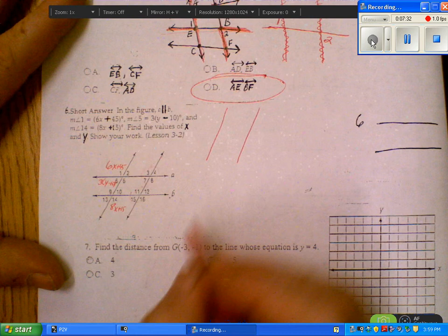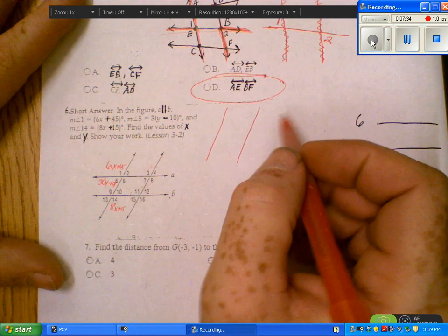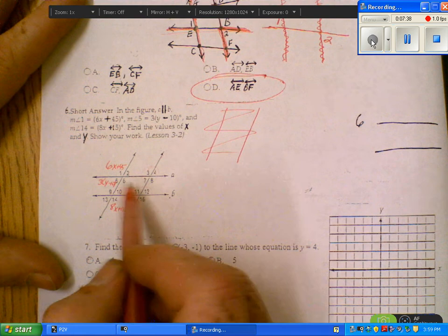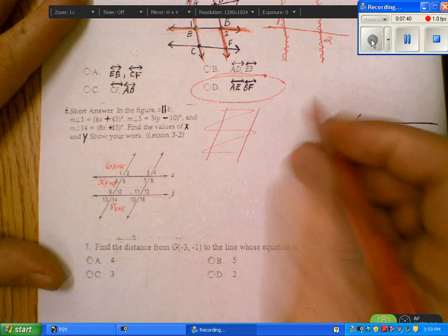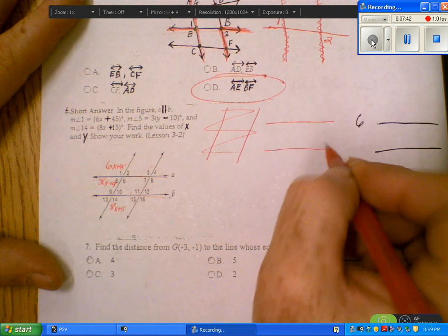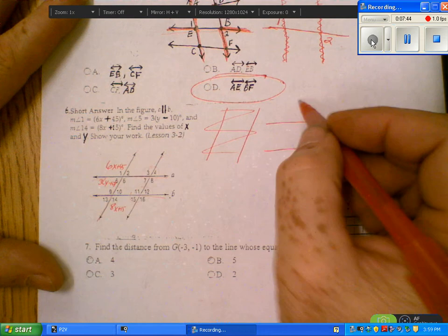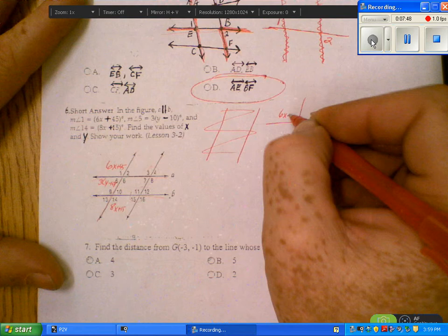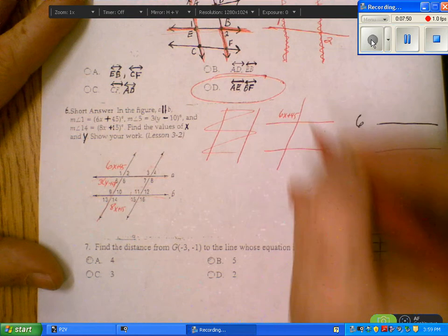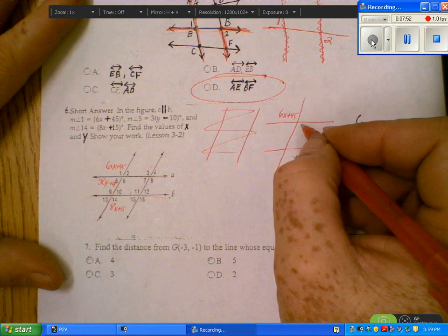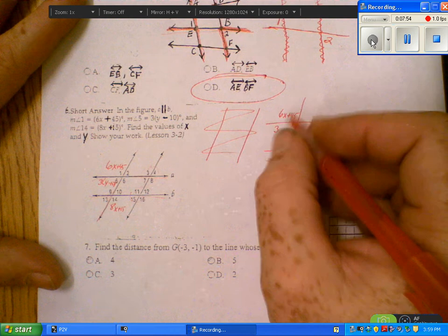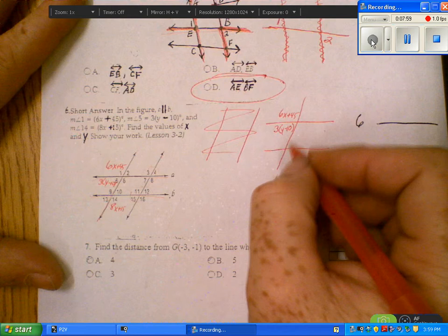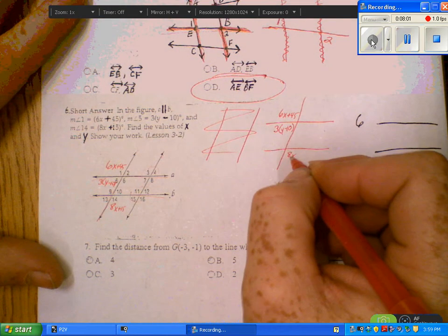I'm going to redraw these two lines and this one as transversal. I'm going to write in the stuff we know. 6X plus 45, that was angle 1. This angle, angle 5 was 3 times Y minus 10. 14 down here was 8X plus 15.